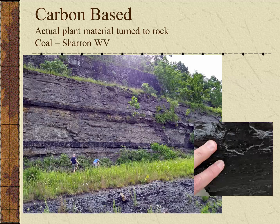The best example of a carbon-based organic sedimentary rock is coal. This is actual plant material that has been compressed and formed into rock. In the larger image, you can see the horizontal black layer above my head — this is a large coal seam in Sharon, West Virginia. The inset is just a close-up of what the coal looks like.